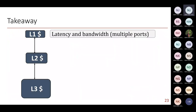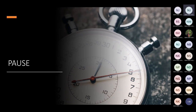The takeaways so far: we've discussed caching and cache hierarchy. Private or smaller caches are designed keeping latency and bandwidth in mind. The last-level cache, which is closer to memory, is designed keeping capacity in mind. With that, I'll pause and take questions.